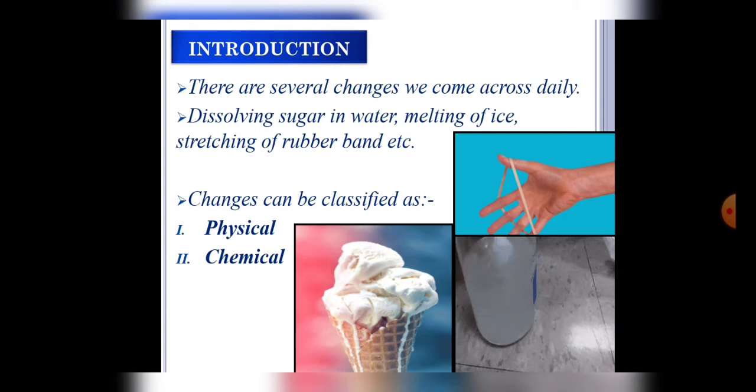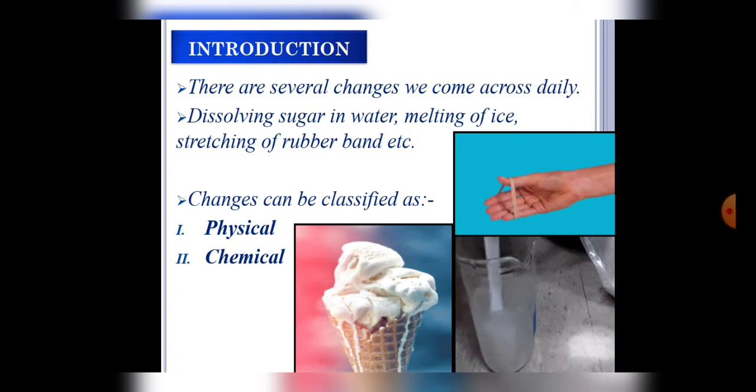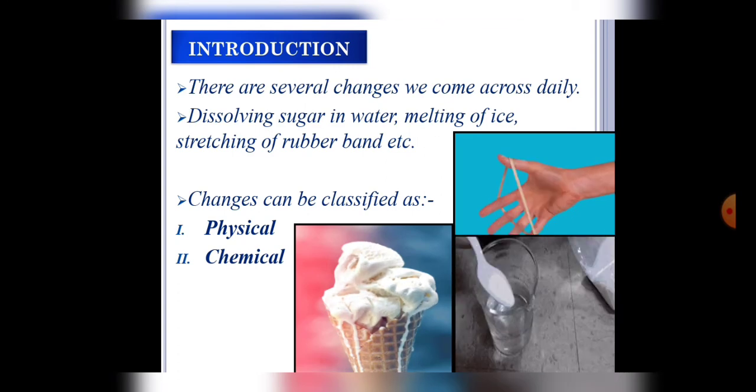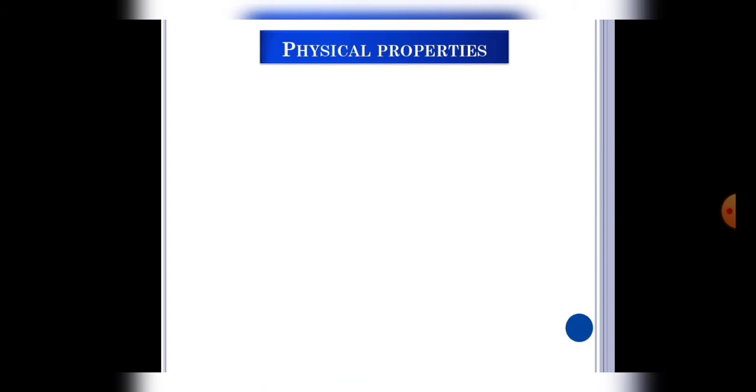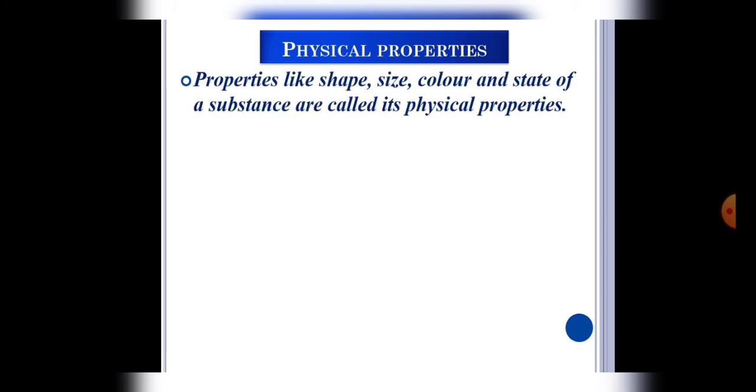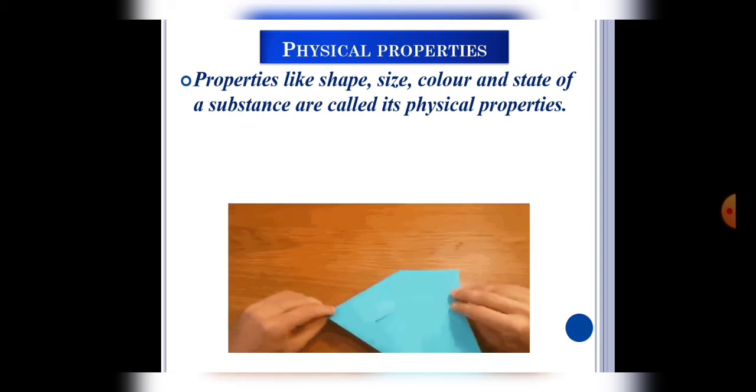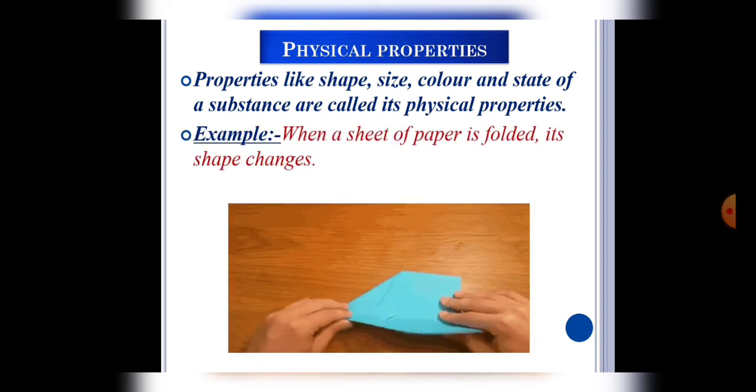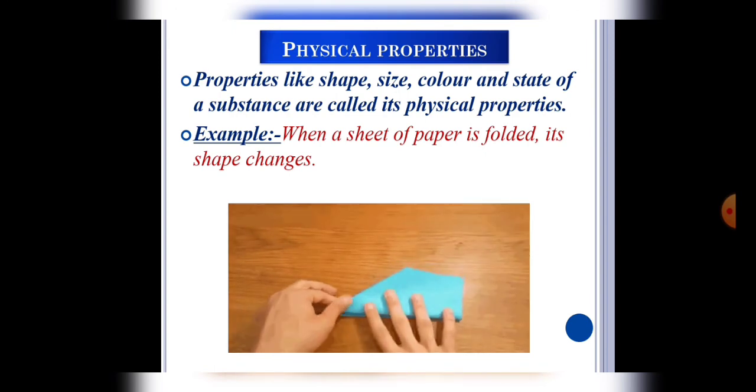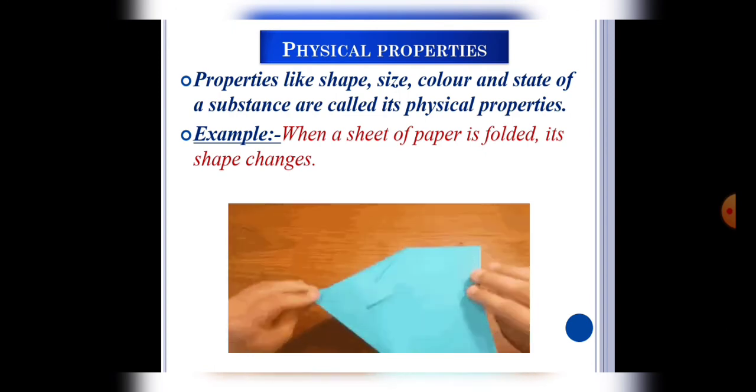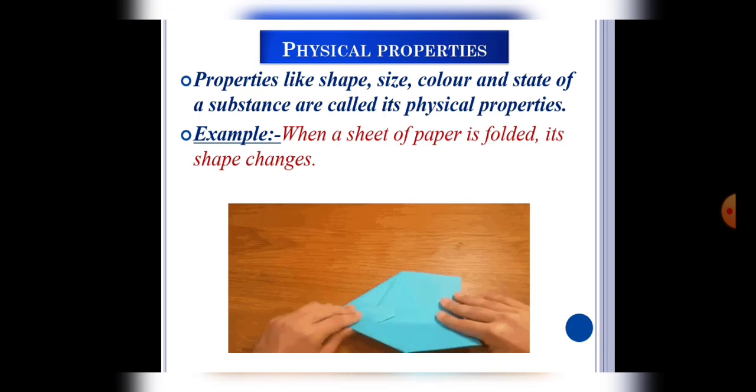So firstly, let's see what is physical property. Students, any substance's shape, size, color, and state is its physical property. For example, when we fold a paper sheet, its shape changes, so this is a physical property.